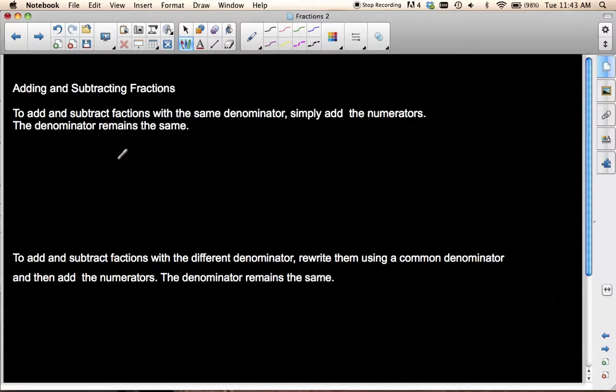The first thing you need to know is when you add and subtract fractions with the same denominator, all you need to do is add the numerators and the denominator stays the same. So for example, we have 1 over 12 plus 3 over 12. Our denominators are already the same, so all we have to do is add our two numerators and we end up with 4 over 12. The denominator remains the same no matter what.